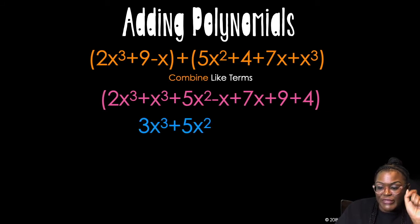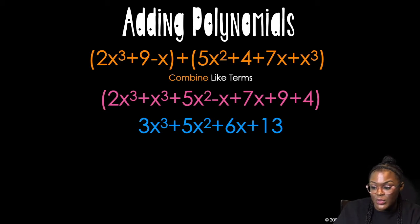2 plus 1 is 3. 5 is just alone. Negative x plus 7 is going to give me 6, and then 9 plus 4 is going to give me 13. Bada bing, bada boom.